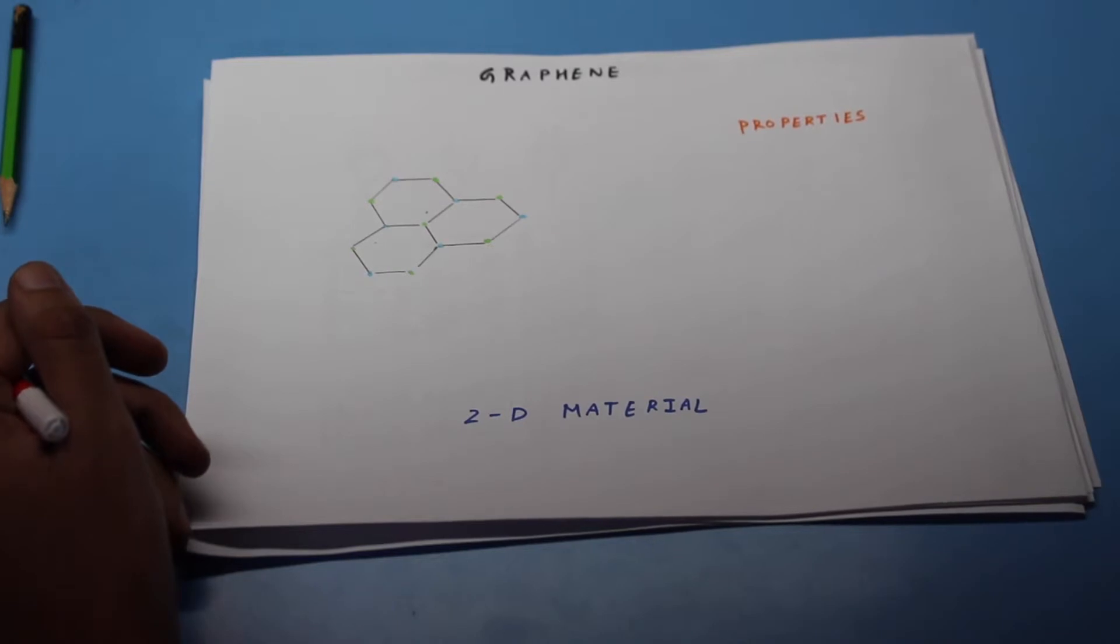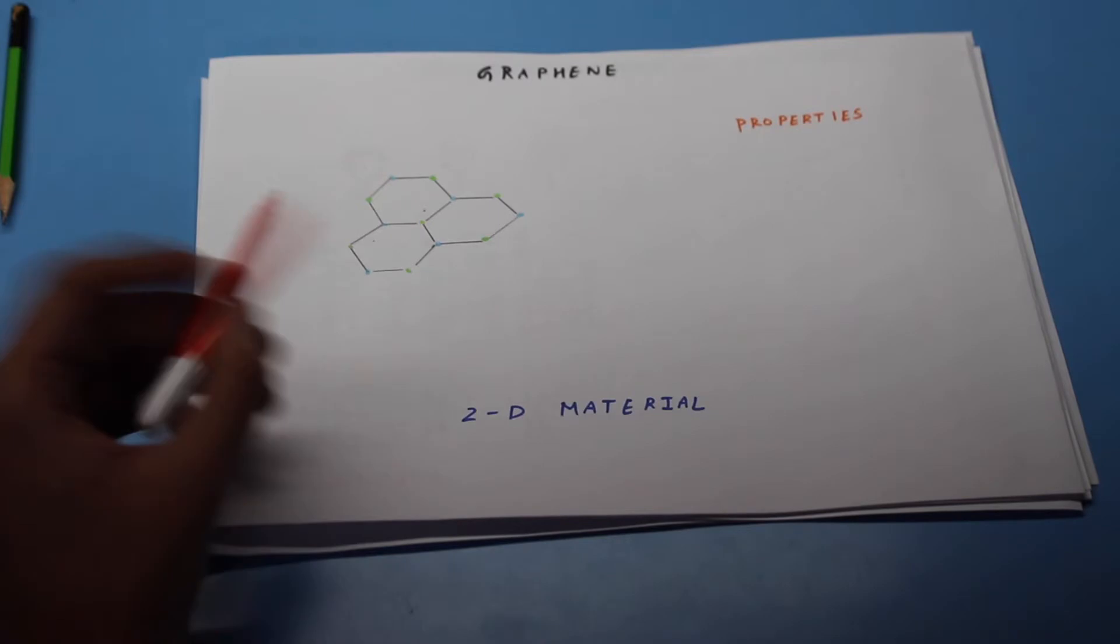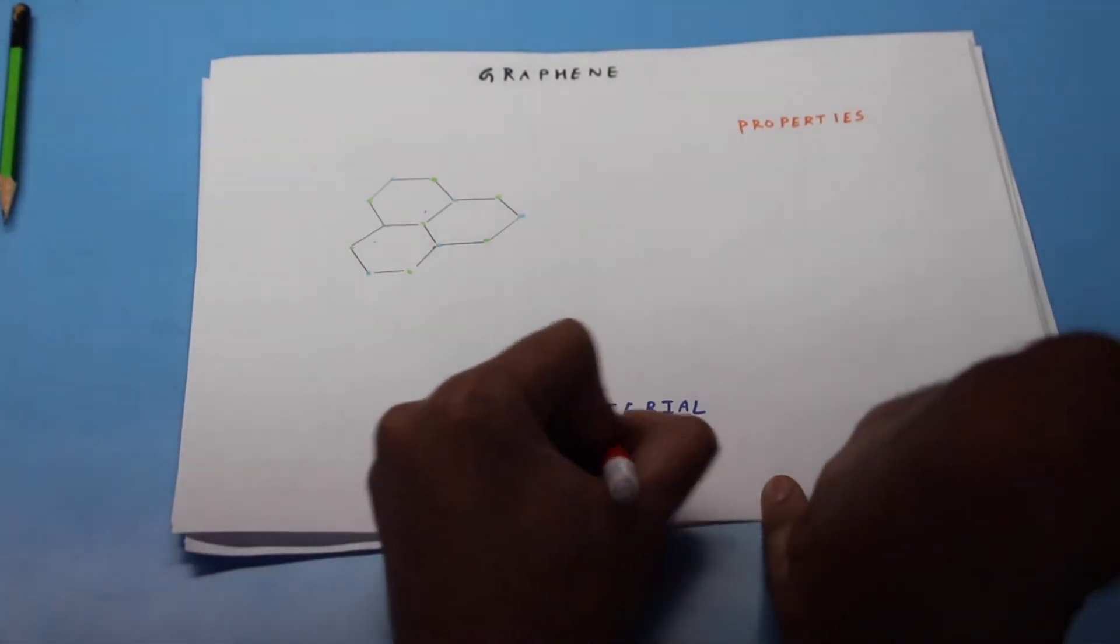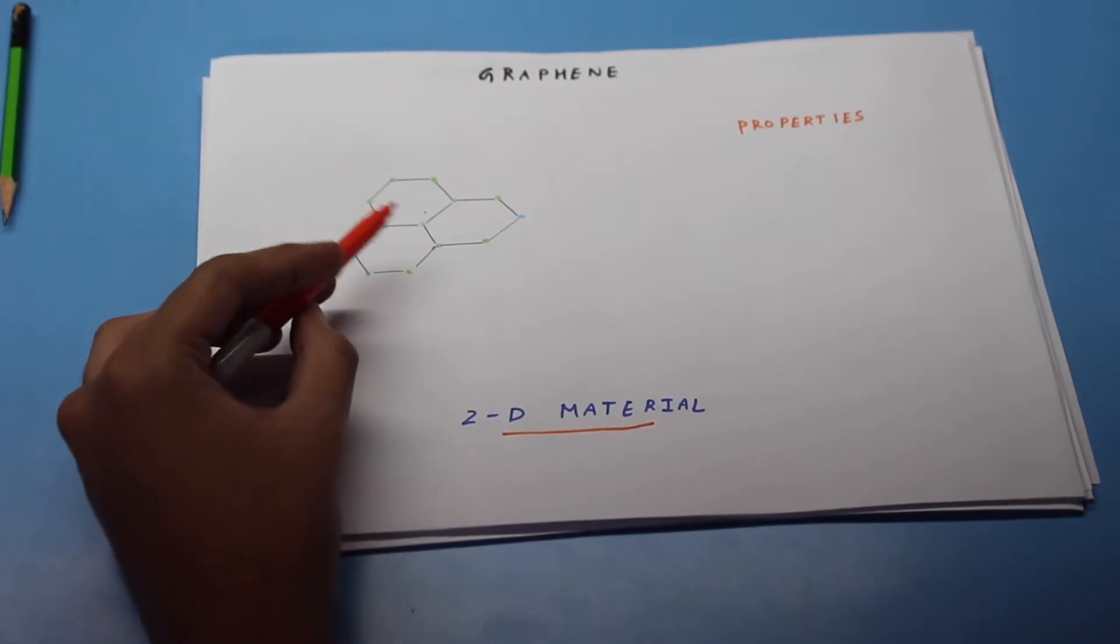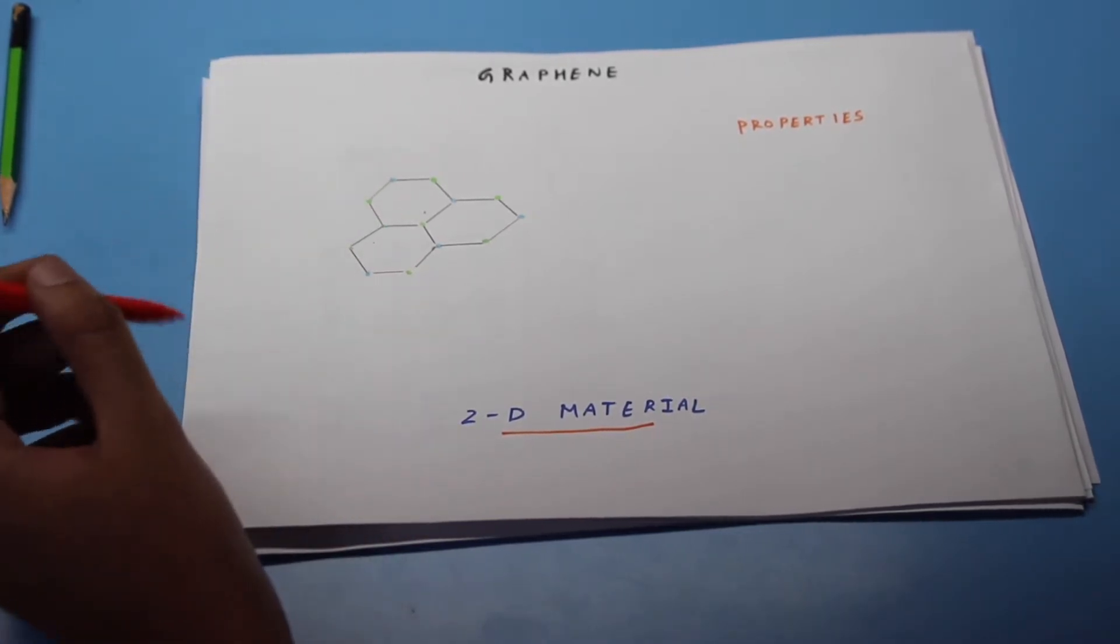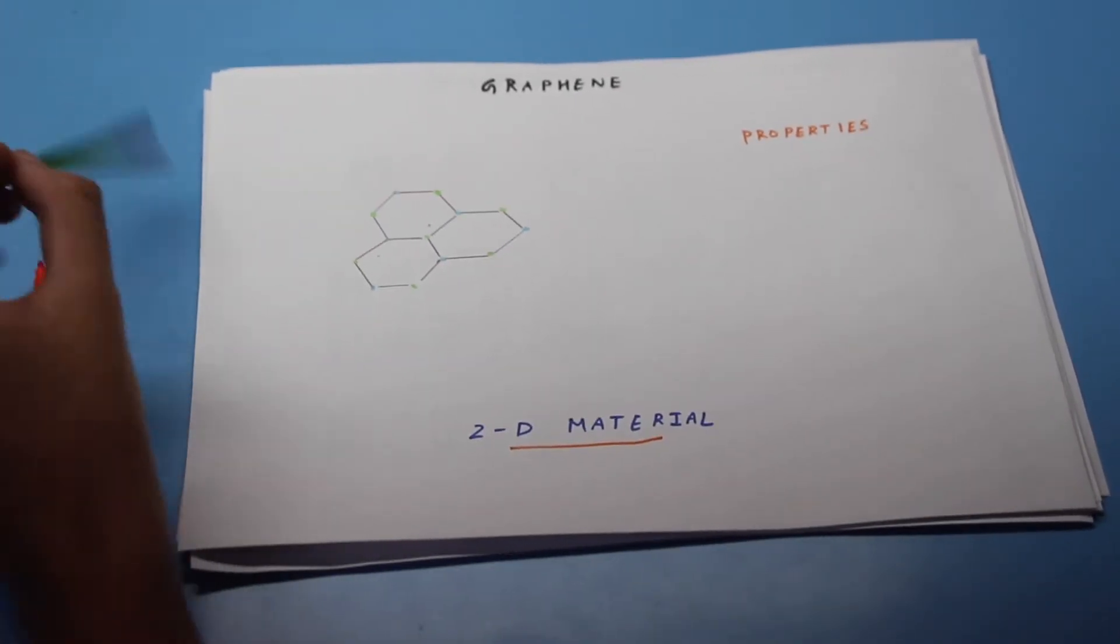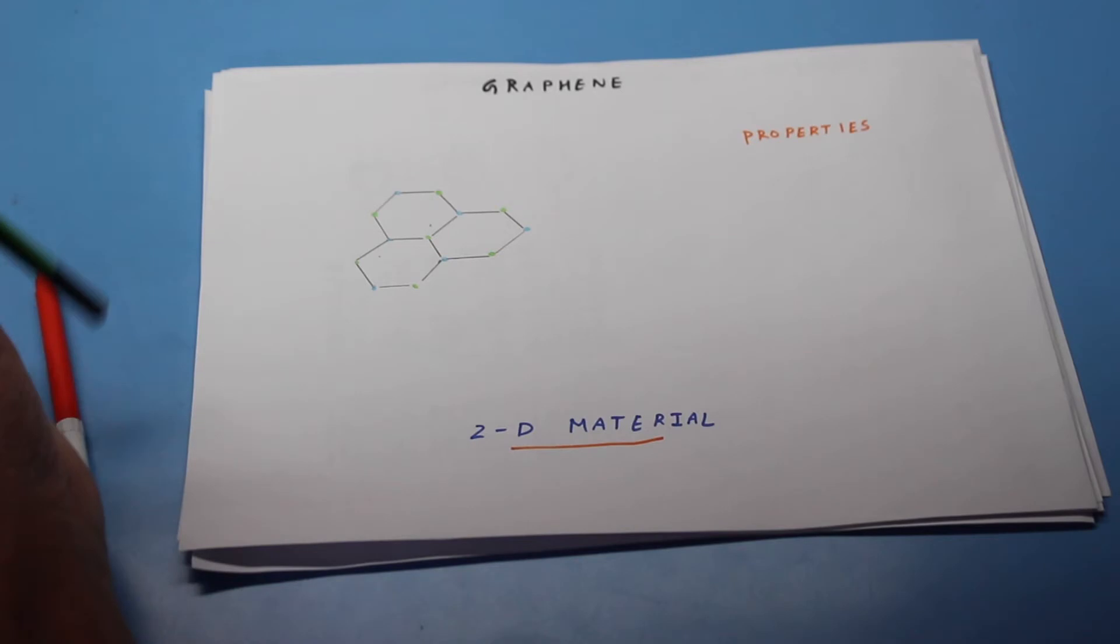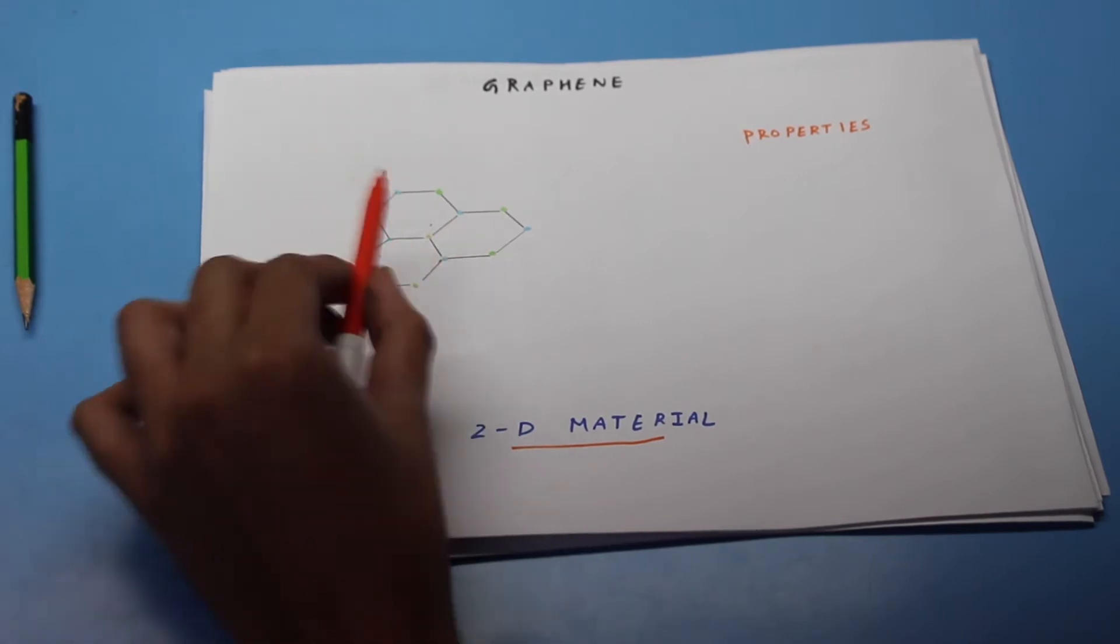Talking about graphene, it is a very special structure because it is a 2D material. That is to say that it only is one flat thin layer of carbon atoms. Now how is graphene actually made? If you know that pencils have a graphite lead, you can take a scotch tape or cello tape and peel layer by layer to get a 2D layer which is graphene.